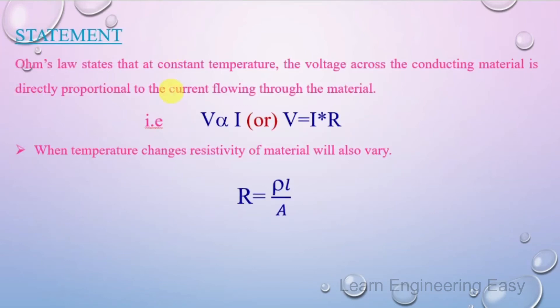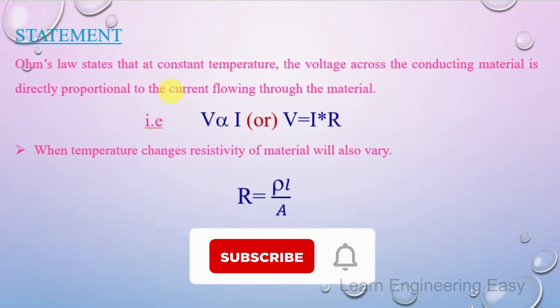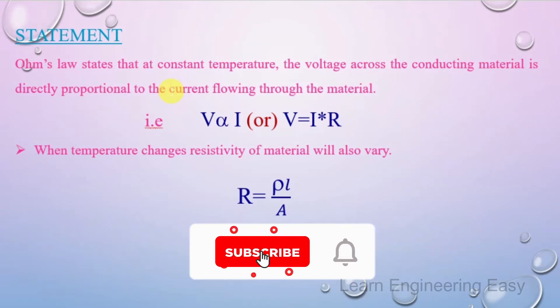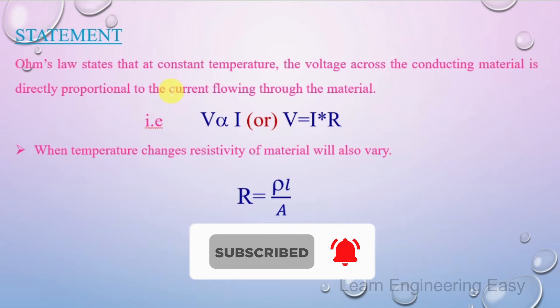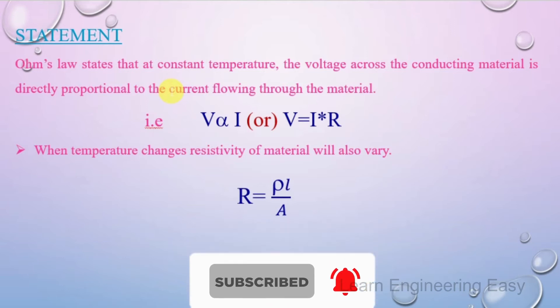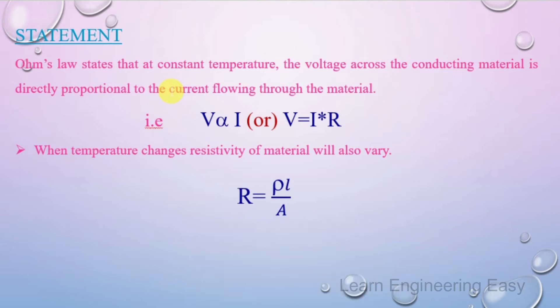This is Ohm's Law. Ohm's Law states that at a constant temperature, the voltage across a conducting material is directly proportional to the current flowing through the material.